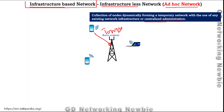If one node wants to communicate with another, the information is first sent to the central entity and then forwarded to the destination. So infrastructure is needed for communication, to create a network so that these nodes can exchange information with each other.